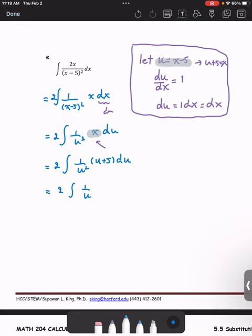Now we have 1 over u plus 5 over u to the second quantity times du.